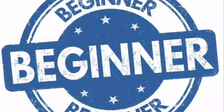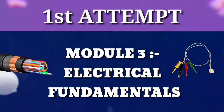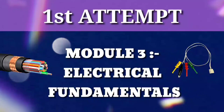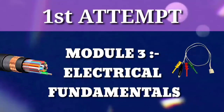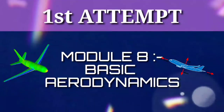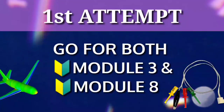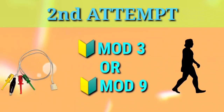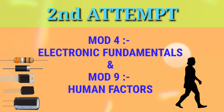If you are a beginner with doubts about which module to give, start with module 3 — it's one of the lengthiest modules and if you clear it your confidence will be boosted. If you don't like electrical much and want to give it later, go for module 8, which is very knowledgeable. So start with module 3 or module 8 — it's your choice. If you are brilliant and have faith in yourself, go for both module 3 and 8. In the second attempt, go for 8 and 9, or choose 3 and 9 if 8 is already given. If you gave both 3 and 8 in the first attempt, go for module 4 and module 9 — since 4 and 9 are very different and if you got bored with electronics you can jump to human factors.